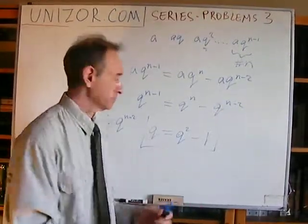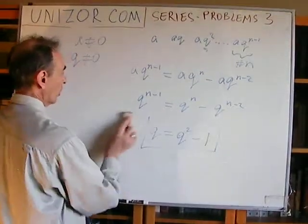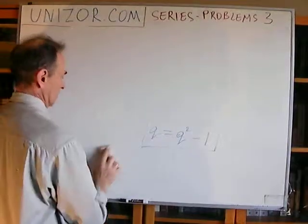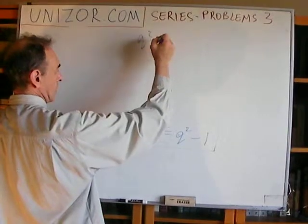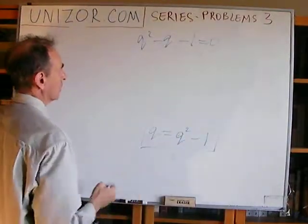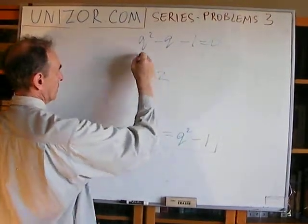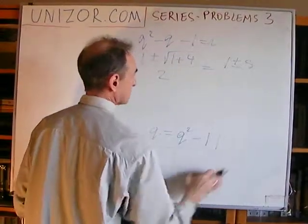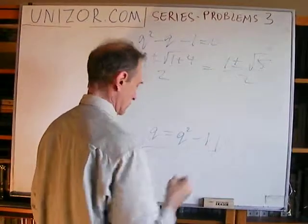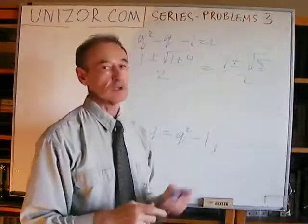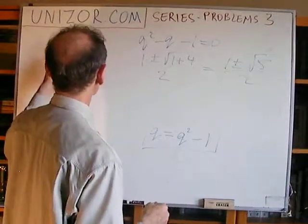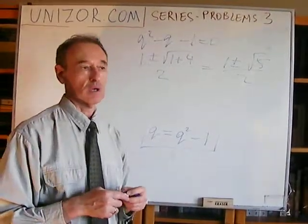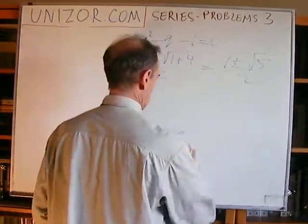The problem asks what is Q if this property is satisfied. All we have to do is solve this simple quadratic equation: Q squared minus Q minus one equals zero. The solutions are Q equals one plus or minus the square root of five, all divided by two. So there are two different solutions, and any geometric sequence with a nonzero first term and either quotient will have this property.